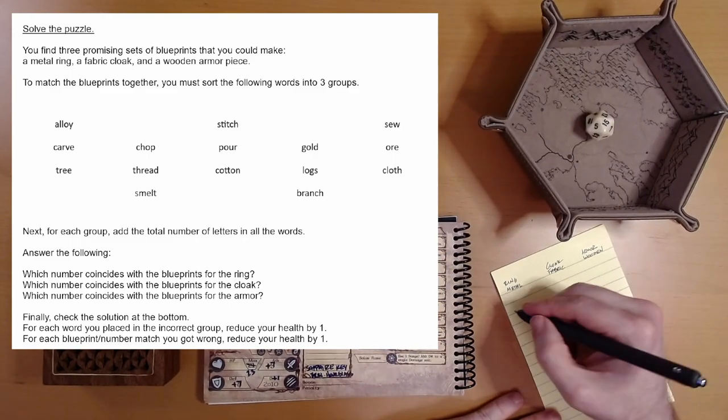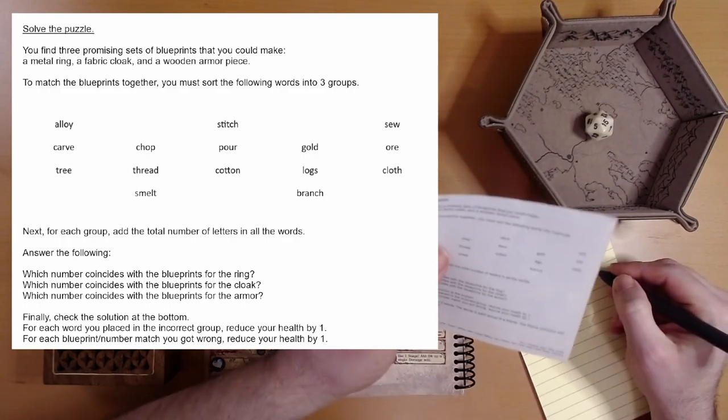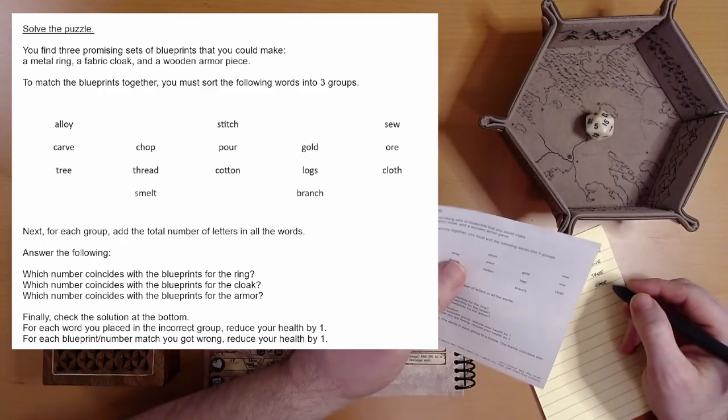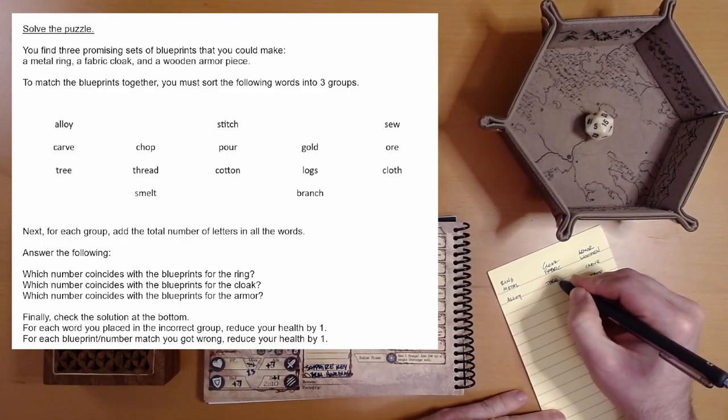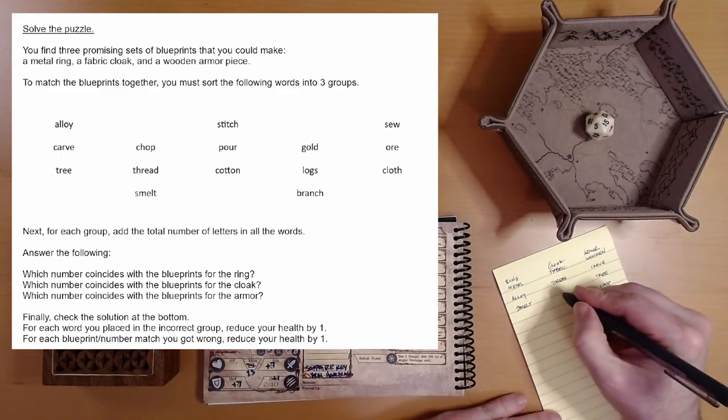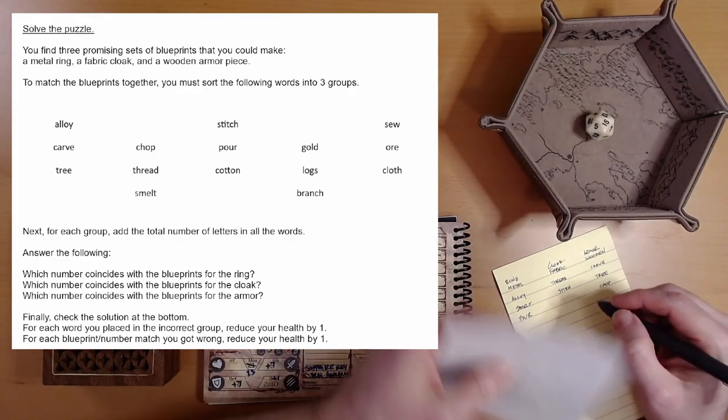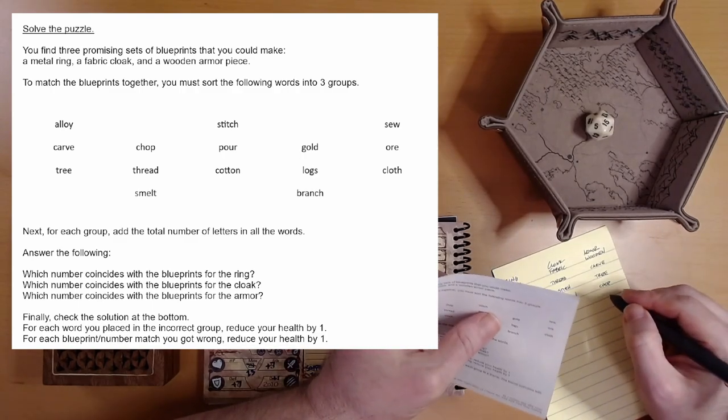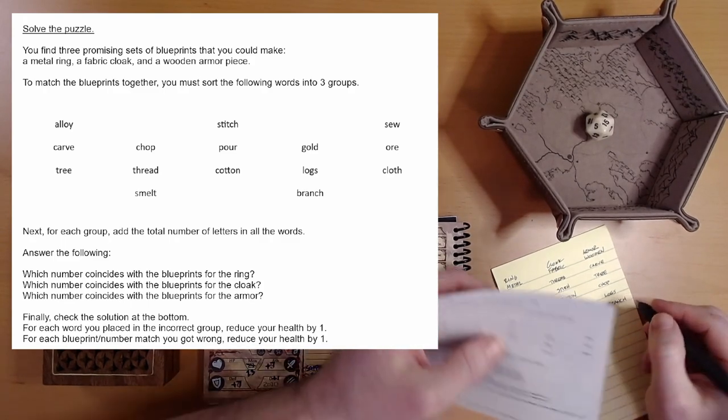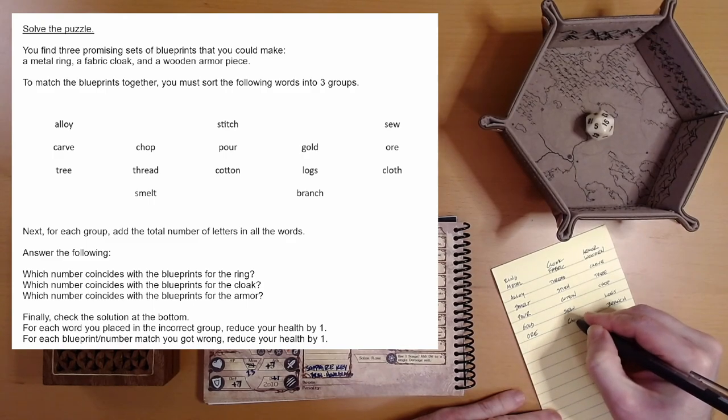Alloy has to do with metal. Carve, you carve wood. Trees are made of wood. Chop, you chop trees. Thread has to do with fabric. Smelt has to do with metal. Stitch, pour cotton. Pour, I guess we're going to pour molten metal. Cotton, gold, logs, branch. Sew or cloth. There's things sorted.